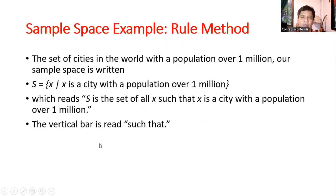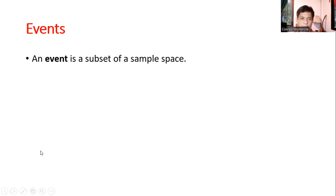So another method of writing the sample space is using the rule method. So for example, the set of cities in the world with a population over one million, our sample space is written as S is equals to, parentheses, X, and then vertical bar, X. It's a city with a population over one million. So this reads as S is the set of all X such that, so the vertical bar reads as such that, X is a city with a population over one million. So the vertical bar is read such that. This is the second method of writing the sample space, the rule method.